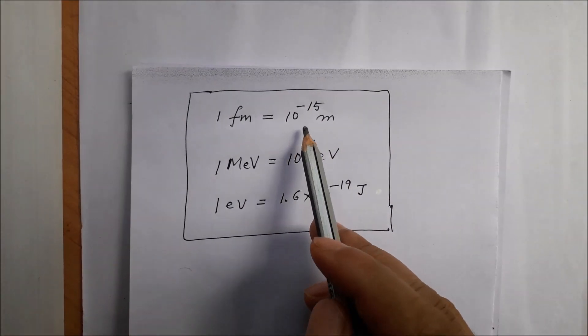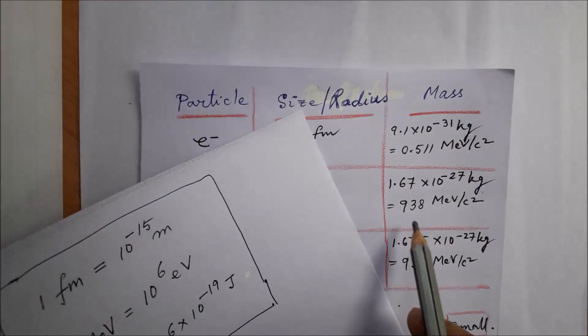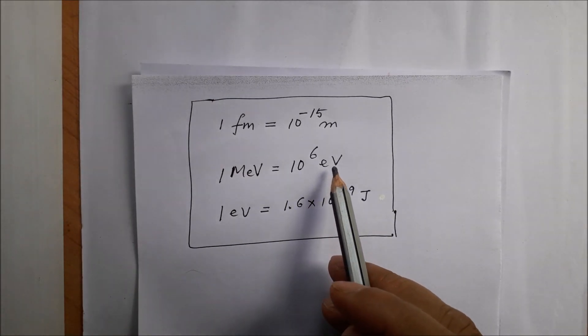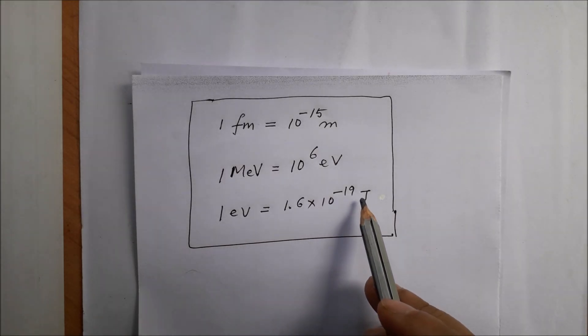One femtometer is equal to 10^-15 meters. One MeV is 10^6 electron volts, where one electron volt is 1.6×10^-19 joule.